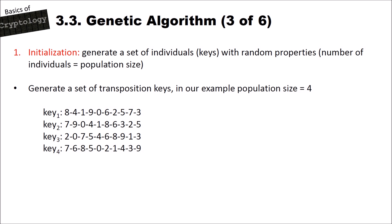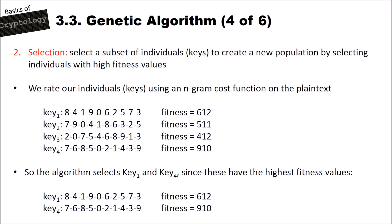The initialization step generates a set of individuals with random properties. As an example, I chose a population size of four — in the real world, you use much larger populations. We have four different 10-character-long transposition keys. Written as numbers for clarity. In the selection step, we select individuals with the highest fitness value, rating our keys using an n-gram cost function on the plaintext. Our algorithm selects key K1 with a fitness of 612 and key K4 with a fitness of 910 as the starting keys for our new population.